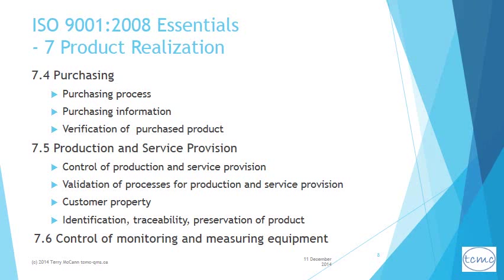7.5 requires the proper care of customer property while under the control of the organization. Customer property may include intellectual property and personal data. Finally, this clause also requires that product be uniquely identified and traced where this is appropriate. This may be done in various ways including configuration management. This also helps with the requirement for product to be preserved in a good state of conformance in its whole and in its parts throughout the stages of processing through to final delivery.